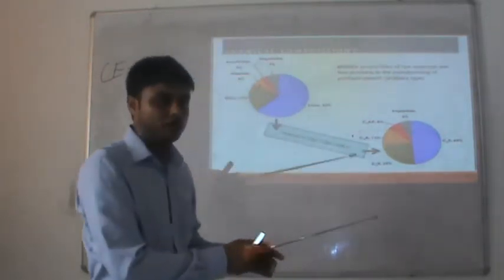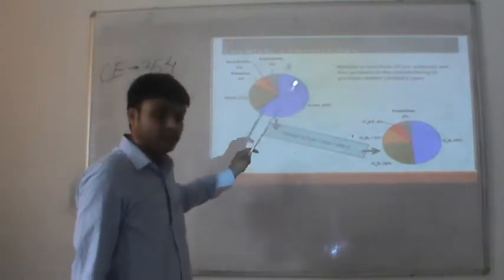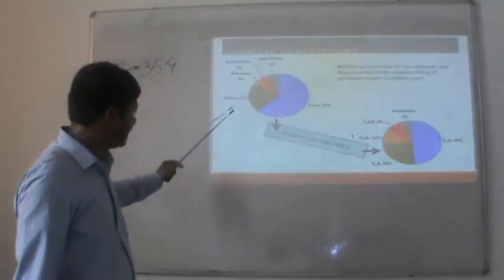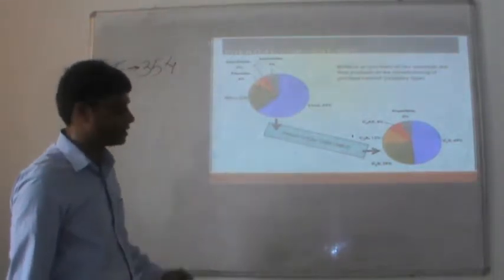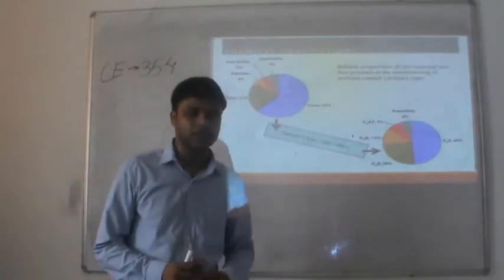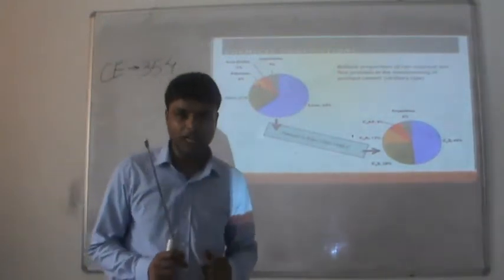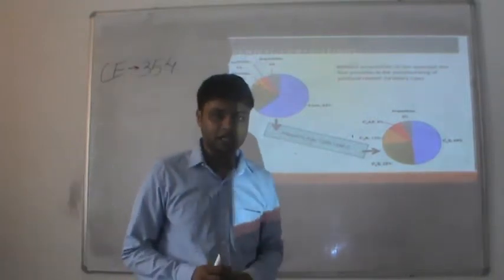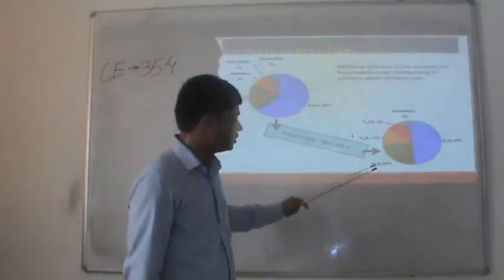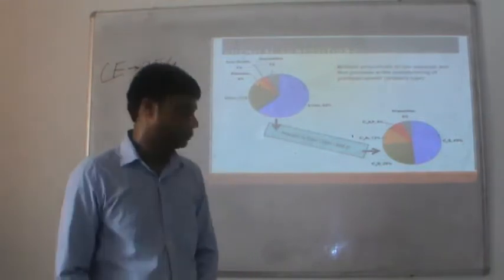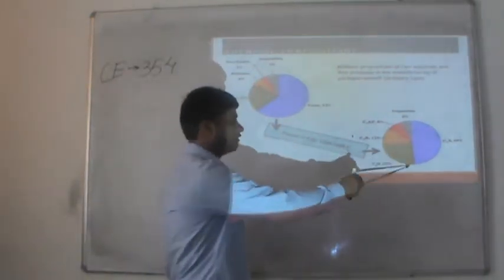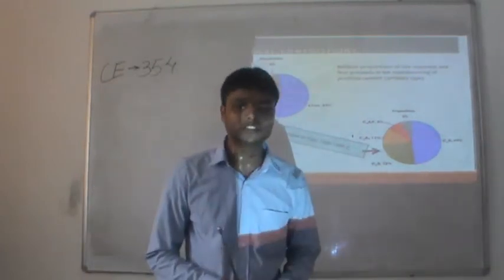The raw material fed into the kiln contains approximately: lime 63%, silica 21%, alumina 6%, iron oxide 3%, and 7% other. After manufacturing, the resulting compounds are: C3S approximately 49%, C2S 25%, C3A 12%, and C4AF 8% — with some variation. These are known as Bogue compounds.